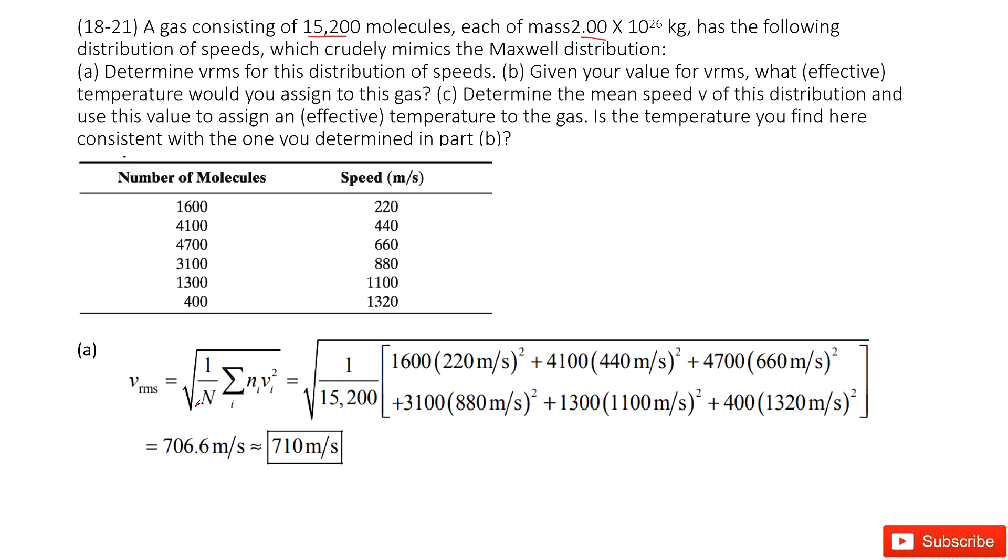You can see we just write the definition for RMS speed. And then the n number is the total number of molecules. It is given—15,200. And then for each distribution.